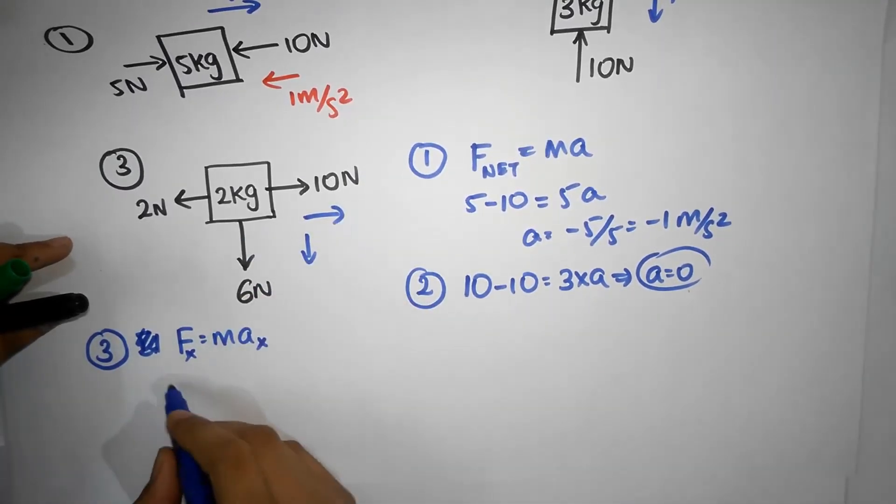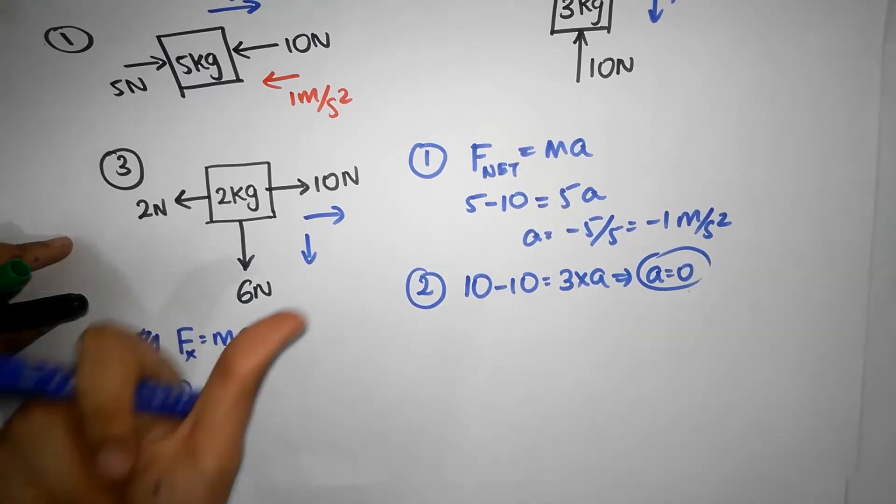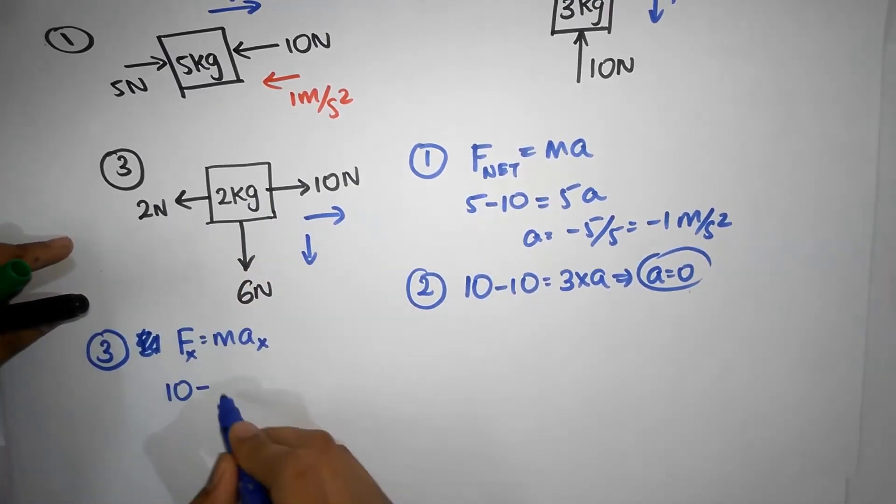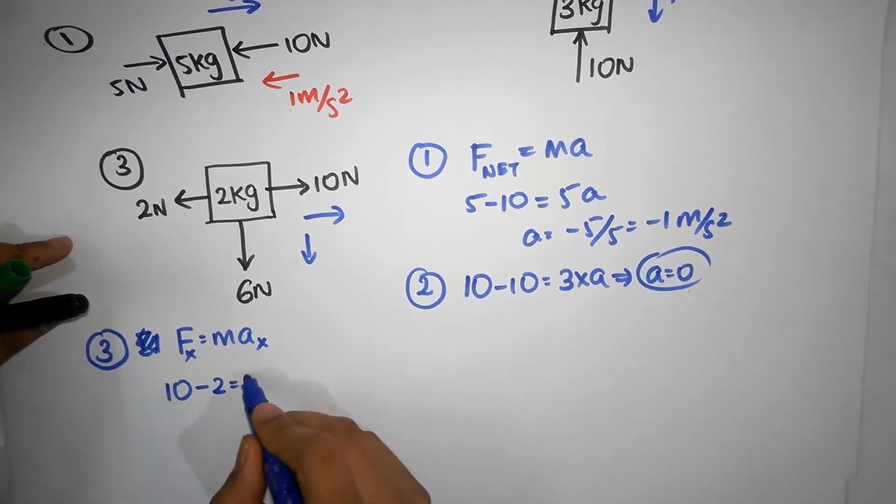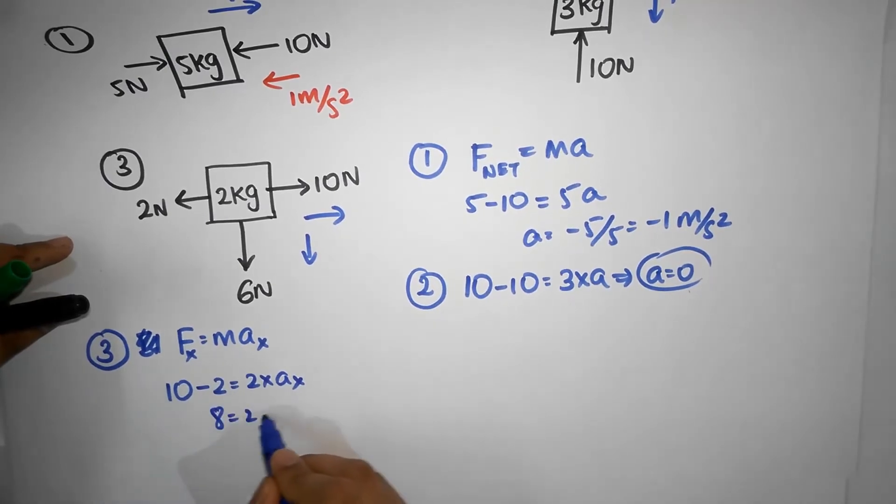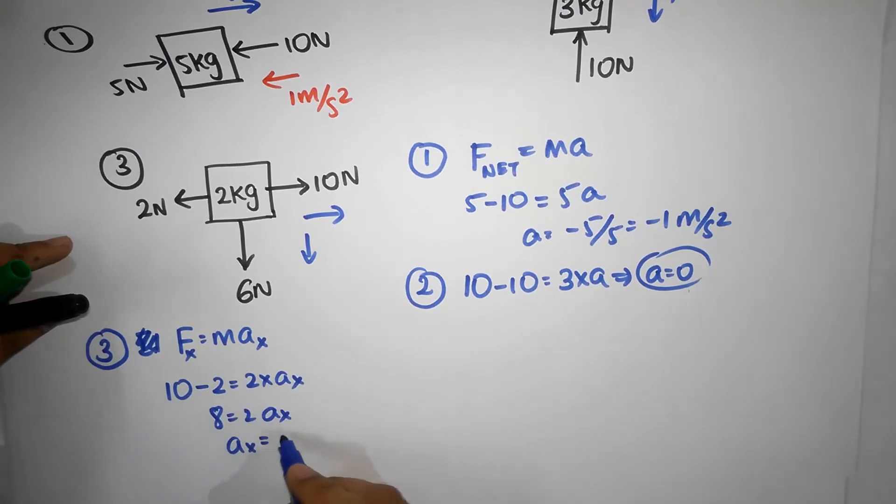So, net force in the x direction is 10 this way, minus 2, that should be equal to mass times Ax. That's 8 equal to 2 times Ax, so Ax is 4.